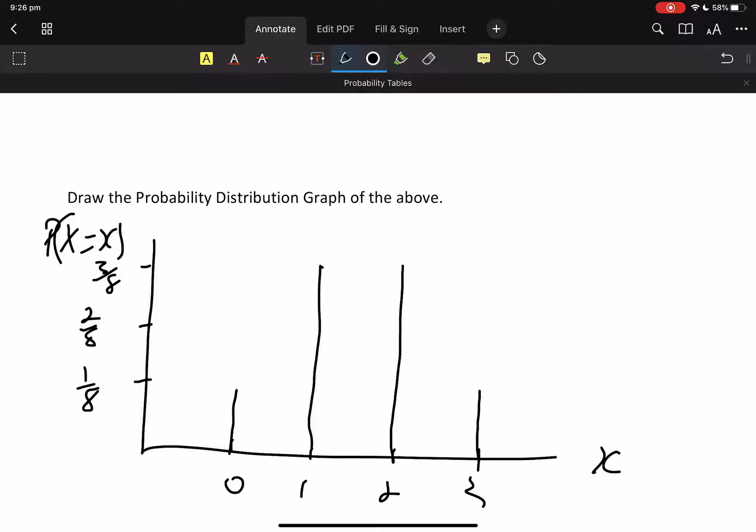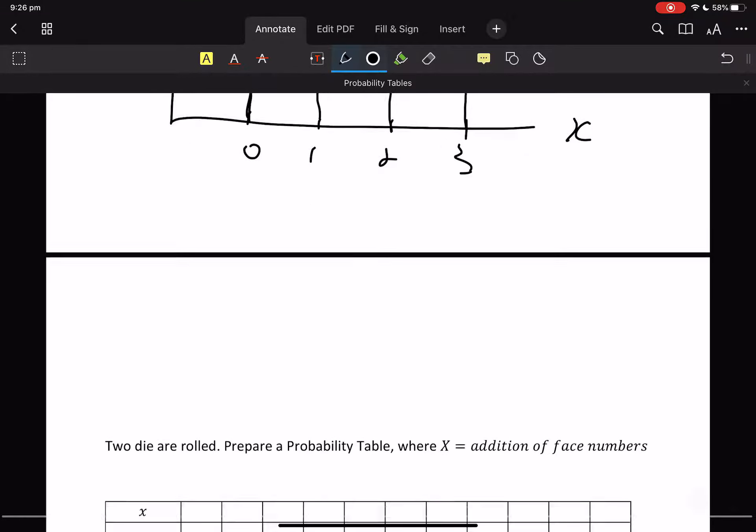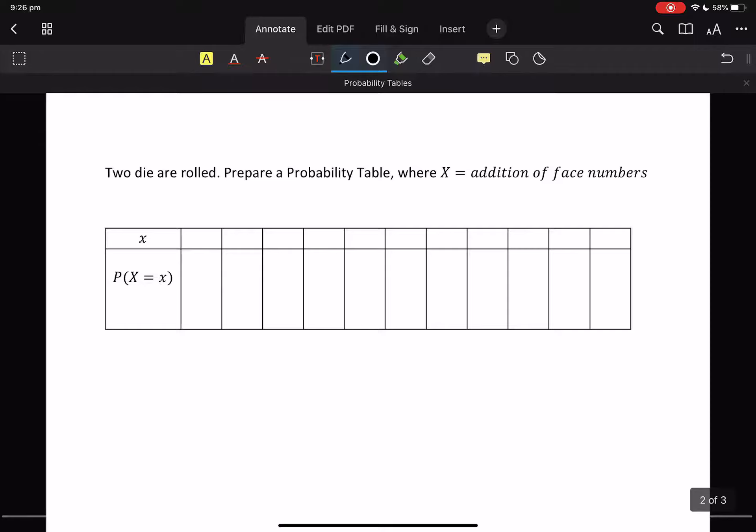It's just lines. Lines get your scale and could not be simpler. Two die are rolled. Prepare a probability table where big X is the addition of the face numbers. So, I've got 2 die here and I add the numbers together.